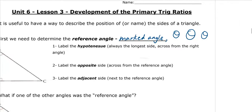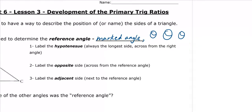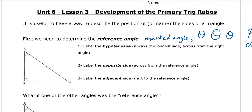Sometimes we use other symbols too. If you have more than one angle, sometimes we use a phi symbol or the alpha symbol. But most of the time we stick with theta. So on a triangle we have a marked angle — label it theta — and in reference to that marked angle, that reference angle, we label the triangle.